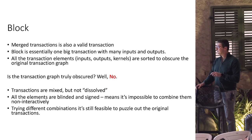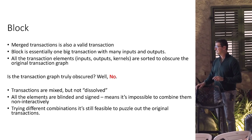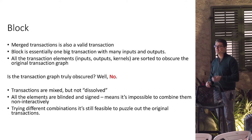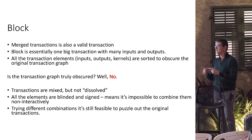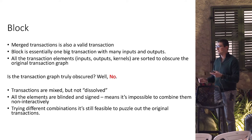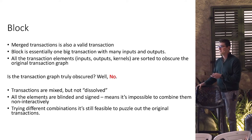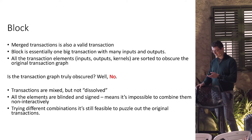Unfortunately, the transaction graph is not fully obfuscated this way. Because a block is many inputs, many outputs, and many kernels, it's possible to try combinations of inputs, outputs, and kernels and see if they sum to zero — and by that, it's still feasible to decipher the original transaction graph.